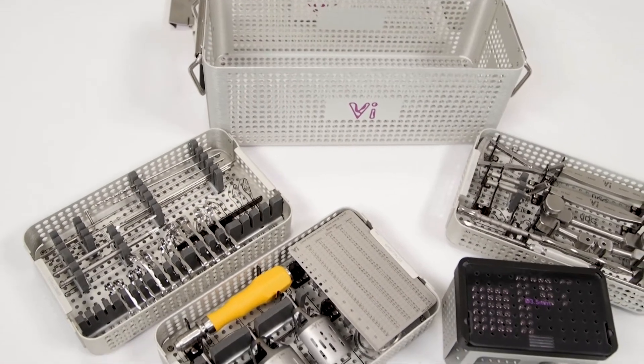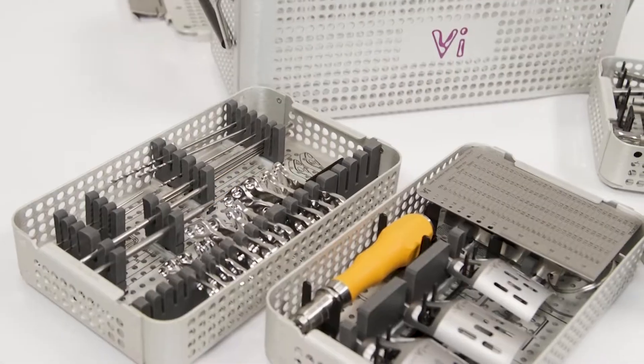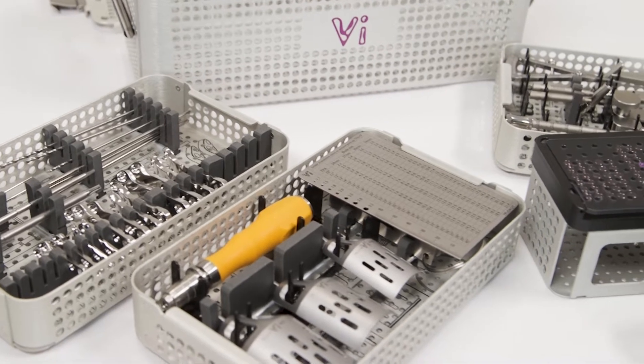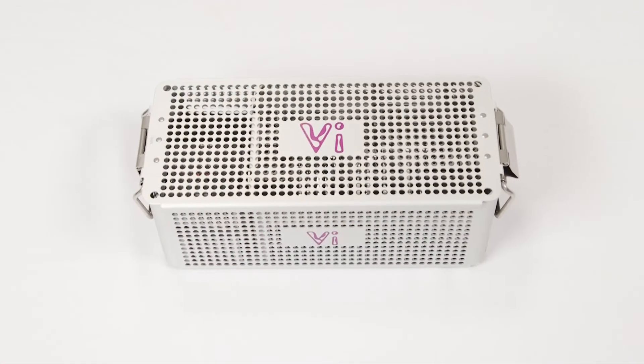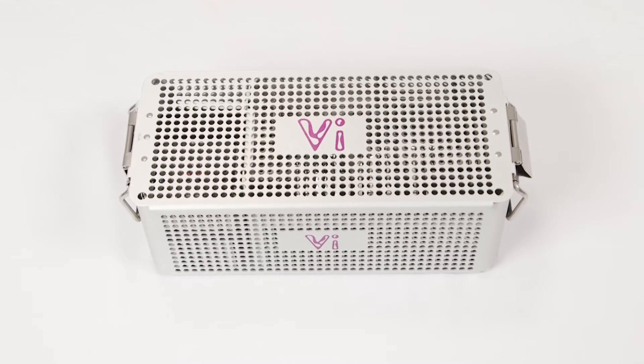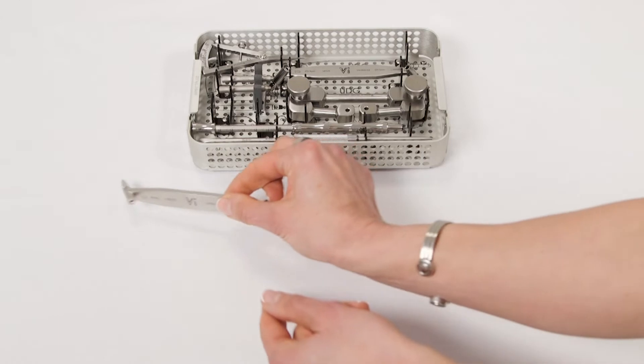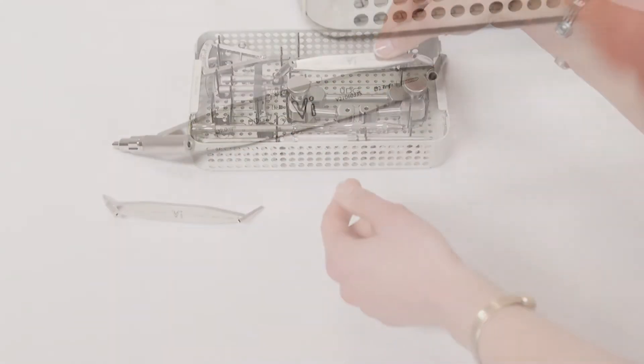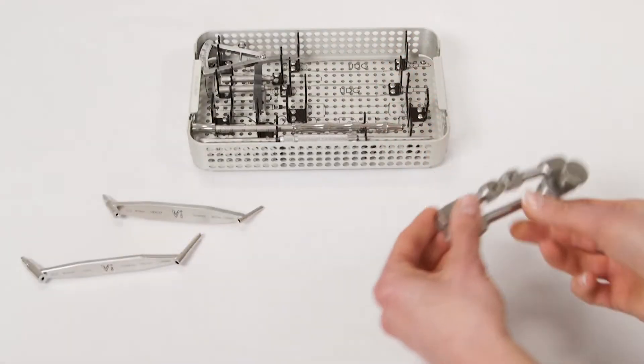The Instrument and Device Trays contain all the equipment typically required when performing a TPLO using the VIL TPLO locking plate. The contents of the kit are comprehensive for this procedure and include the Universal Drill Guide in both sizes and a TPLO Jig.